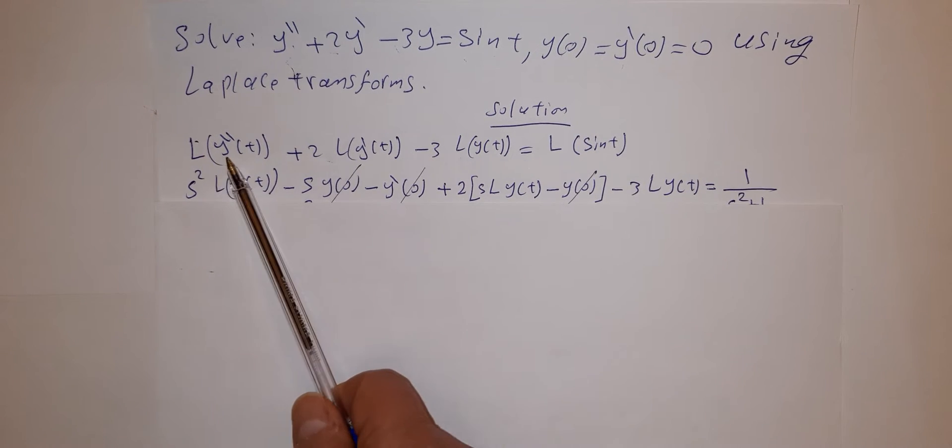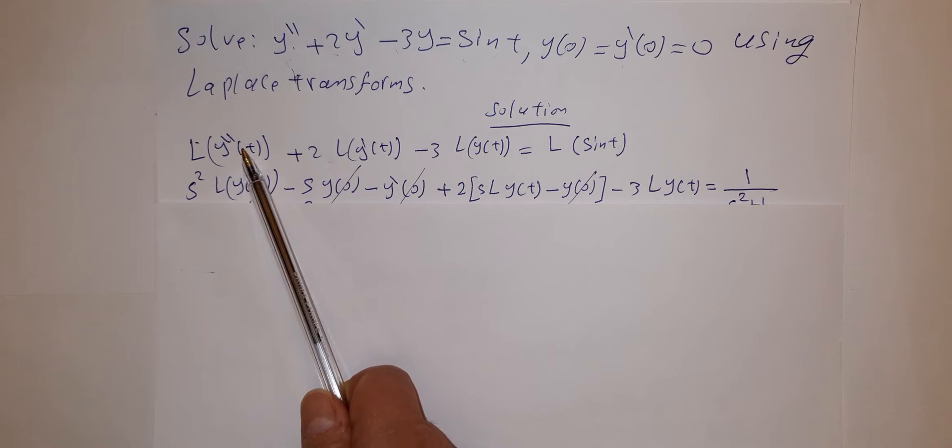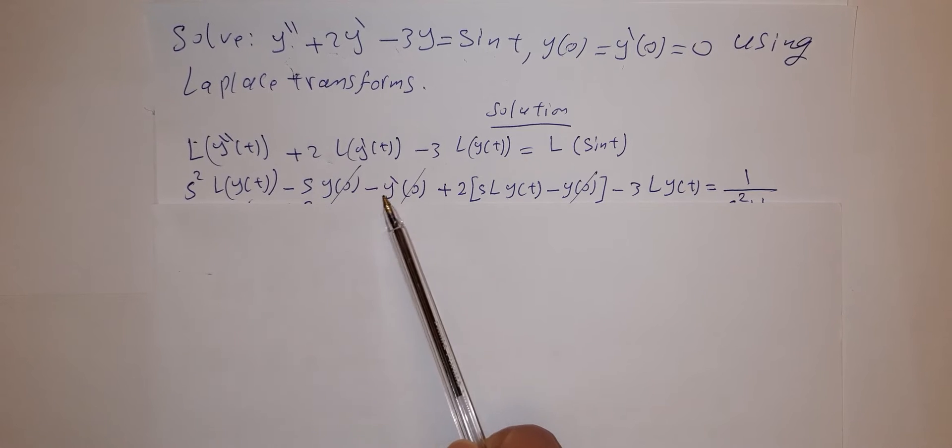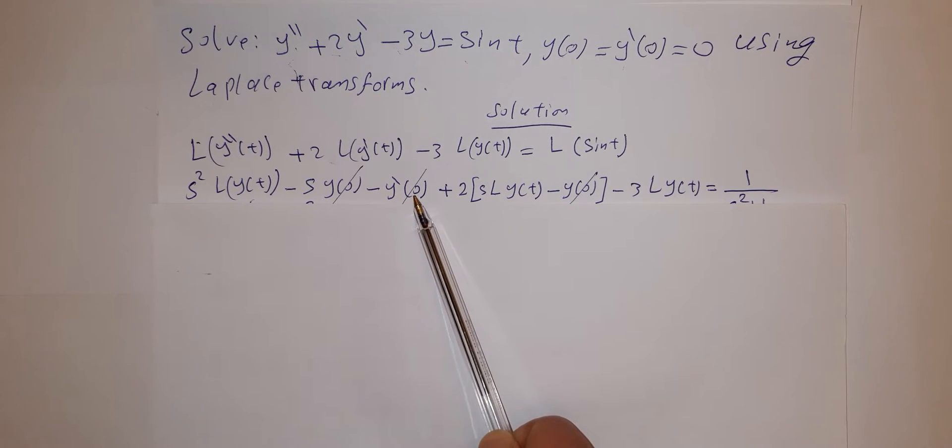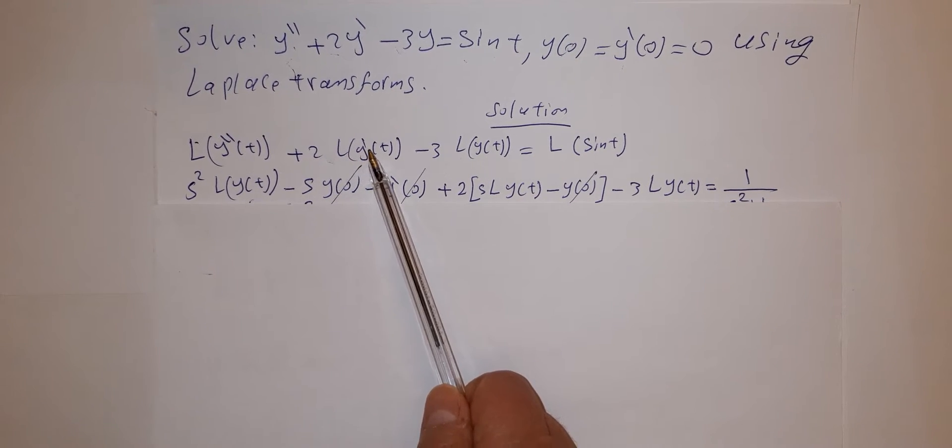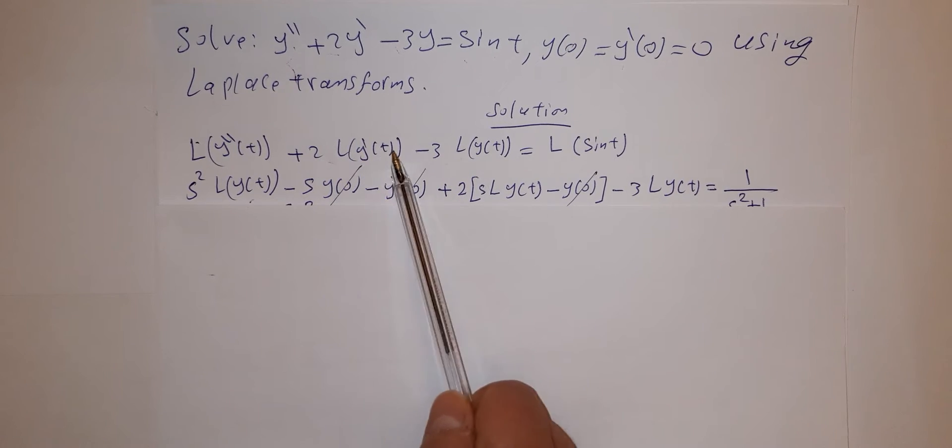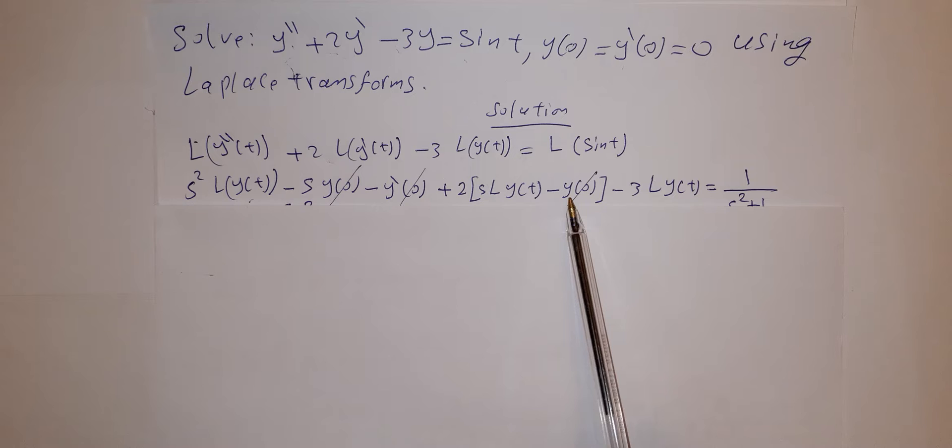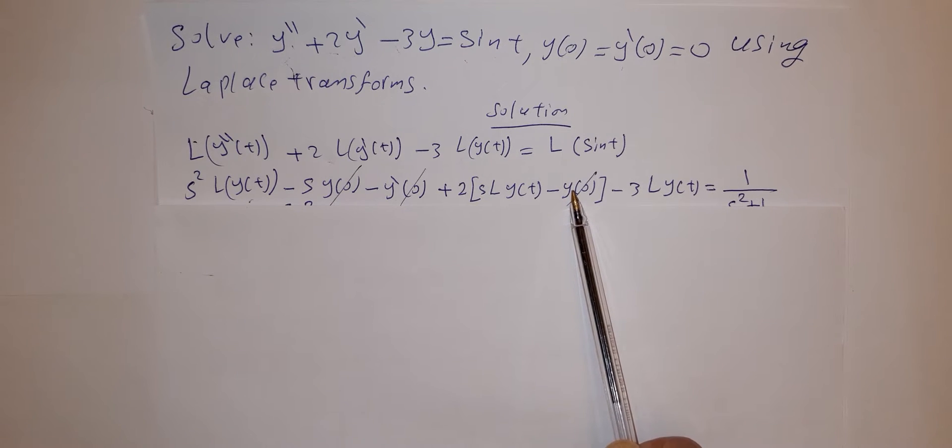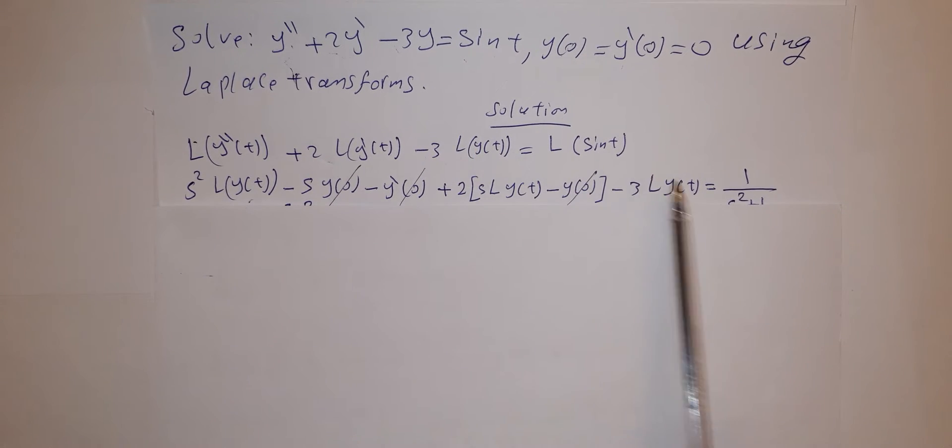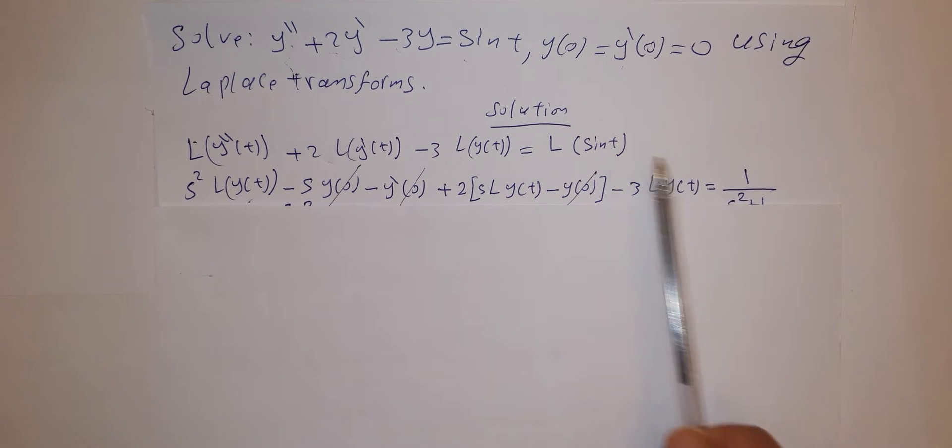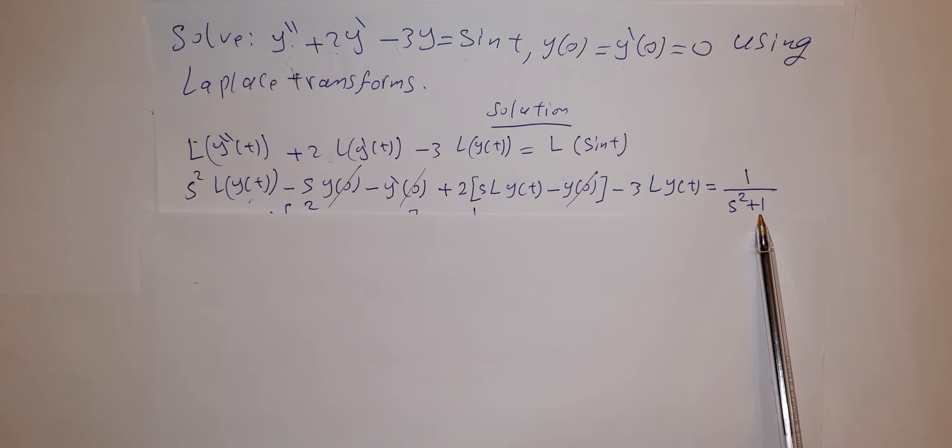From the previous rule, Laplace y double prime equals s squared Laplace y minus s y of 0 minus y prime of 0. Now Laplace y prime equals s Laplace y minus y of 0, minus 3 Laplace y equals Laplace sine t, which from the table of Laplace transforms is 1 over s squared plus 1.